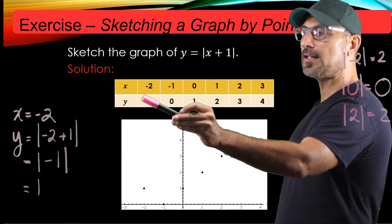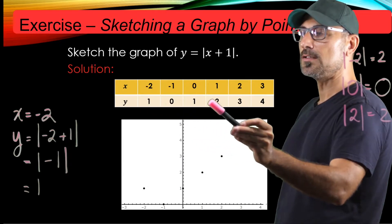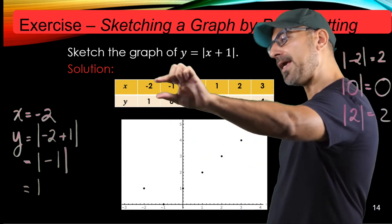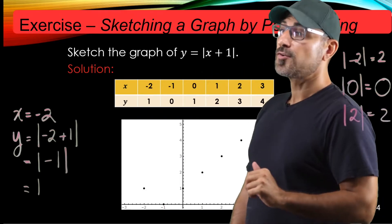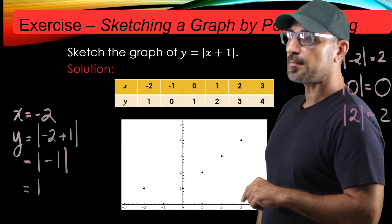I got the y values to be 1, 0, 1, 2, 3, 4. So now I have x and y pairs that define points. What I do is mark them in the xy plane.